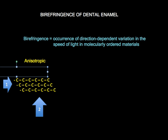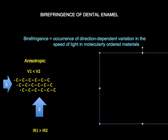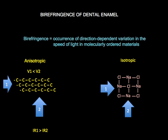So, we can say that light velocity in direction 1 is lower than that in direction 2, and that the refractive index in direction 1 is higher than that in direction 2. This is a different situation compared to that of an isotropic material.